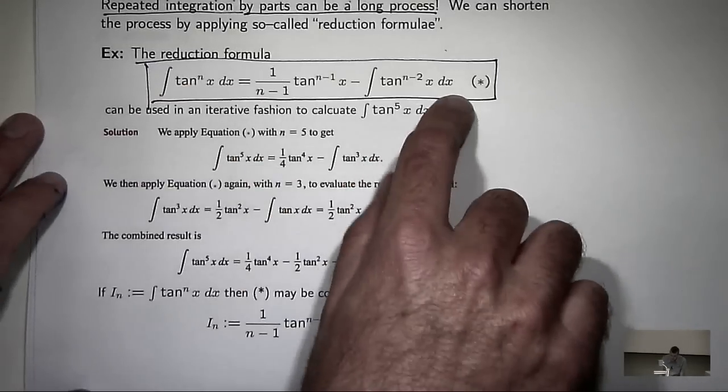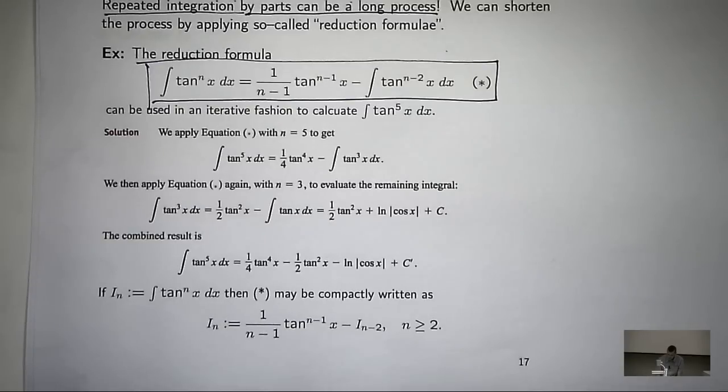You can integrate this just by going up here and plugging in n equals 3. So it's kind of like an iterative process. One step's usually not enough. You need to do it a few times. Each time the mathematics involved gets simpler and simpler. So it's very good. I highly recommend reduction formulae.